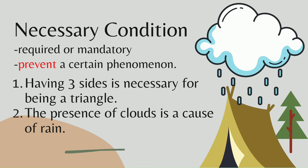In necessary condition, the absence of the condition prevents a certain phenomenon from happening. For example, the presence of clouds is a cause of rain. Therefore, rain is prevented by having no clouds present.